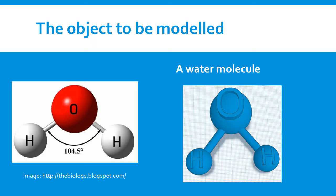In this tutorial, we will 3D model a molecule, which is a group of two or more atoms held together by chemical bonds. This can be 3D printed, thus obtaining a tangible object that helps students to better visualize and understand the molecular world. We will use some simple features to model a water molecule.